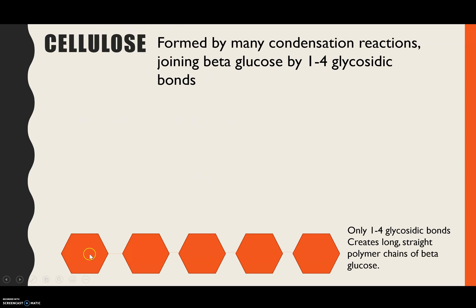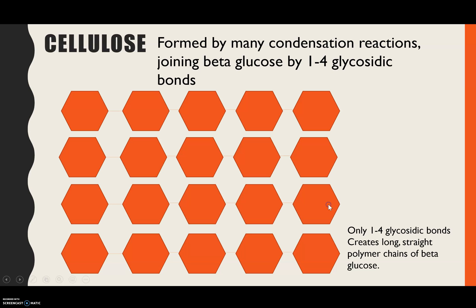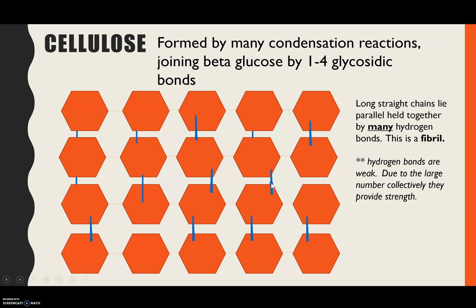The beta glucose molecules are joined by condensation reactions to create long straight chains, containing only 1 to 4 glycosidic bonds. Those long straight chains of beta glucose line up parallel to each other and are held in place by many, many hydrogen bonds — represented by the blue lines shown here. You'd get a mark for describing the long straight chains, and a second mark for noting that these chains are held by many hydrogen bonds to form a structure called a fibril.